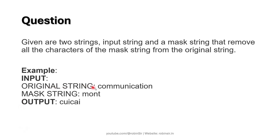Here we have the original string 'communication' and the mask string as 'mont'. Now, m is removed from communication, o is removed, n is removed, and t is removed. That's why we are now left with this new string, which is the desired output.